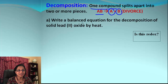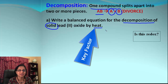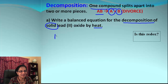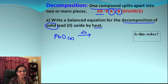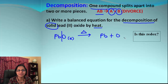Let's work on an example: write a balanced equation for the decomposition of solid lead(II) oxide by heat. Most of the time decomposition takes place when a substance is heated. Lead(II) oxide has the formula PbO, given as solid. Heat is represented by a triangle on top of the arrow. The compound splits into its individual parts: Pb and oxygen. Lead is a metal so it will be solid; oxygen will be a gas as O₂.